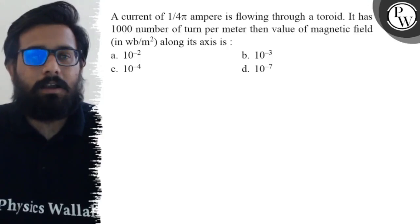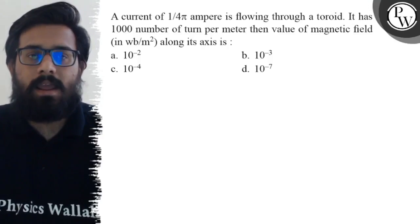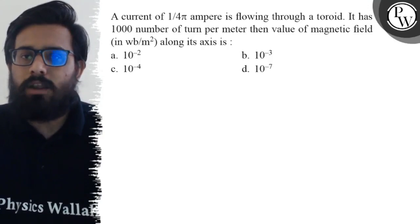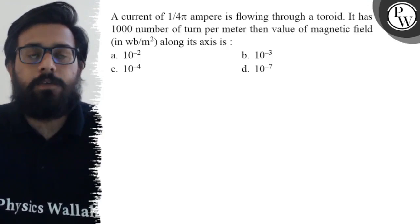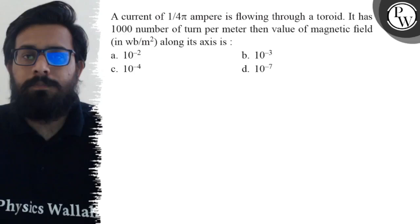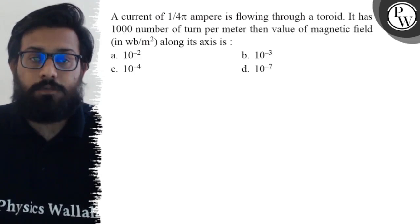Hello bachos, let's see the question. A current of 1 by 4π ampere is flowing through a toroid. It has 1000 number of turns per meter, then the value of magnetic field along its axis is...